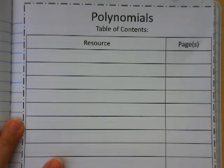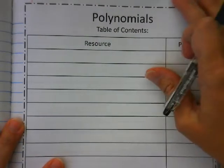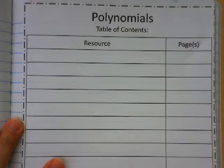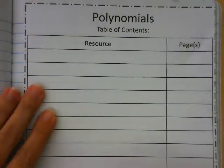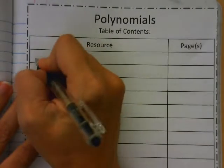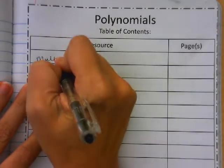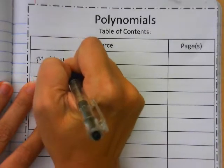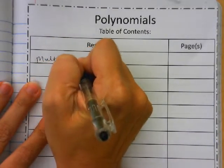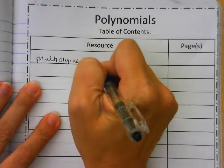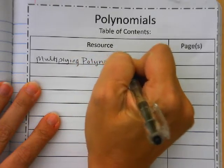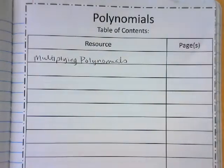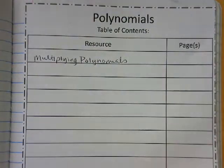Our next unit is on polynomials. We've done a little bit of this with our adding and subtracting, but we're going to get into the meat of it now. So our notes today are going to be on multiplying polynomials. Go ahead and add that to your table of contents after you've put it in your journal.